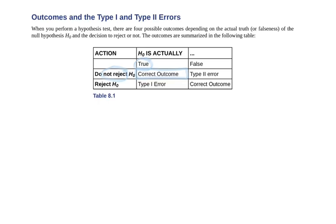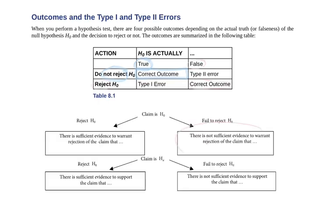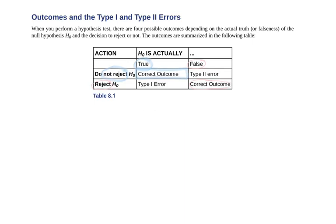If the null hypothesis is actually true and we end up not rejecting it, that's a correct outcome. Also, we could say that if it's false and we end up rejecting it, that's also a correct outcome. But we do have different type errors. You could have a type 1 error or a type 2 error.